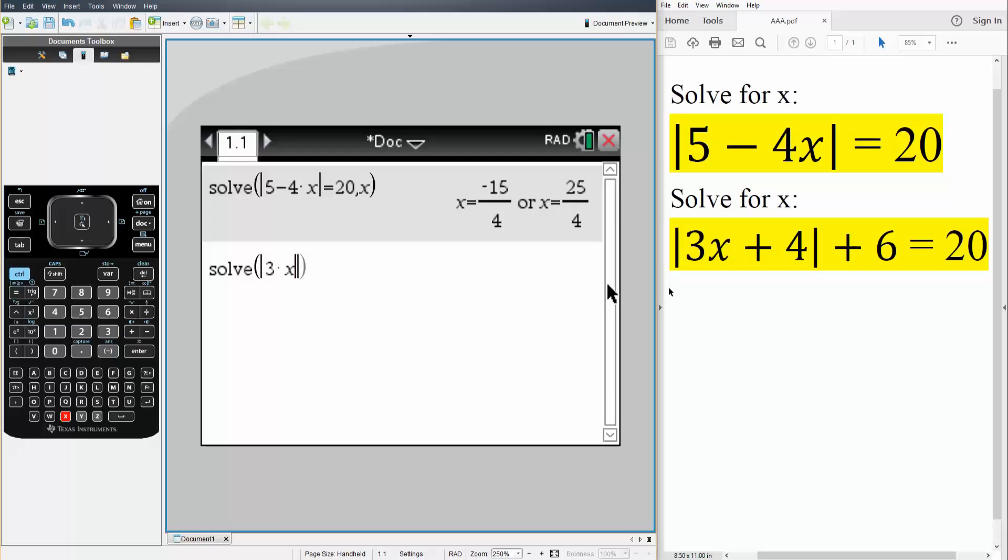So we have 3 times x plus 4 and on the outside of the absolute value sign we have plus 6 is equal to 20 and we want to solve for x. So comma x like this we hit enter and we get two answers.